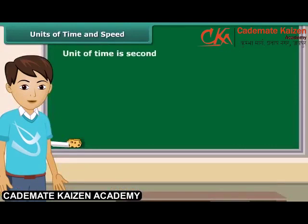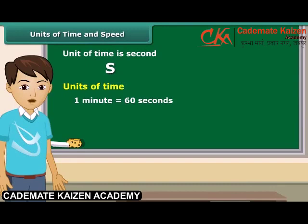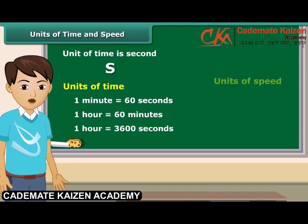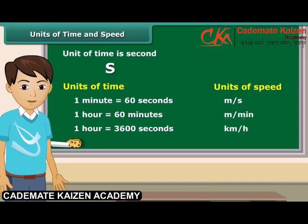The basic unit of time is second, and its symbol is S. Larger units of time are minutes and hours. One minute is equal to 60 seconds and 60 minutes are equal to one hour. The basic unit of speed is meter per second. We can also express it in other units such as meter per minute and kilometer per hour. We write the symbols of all units in singular.